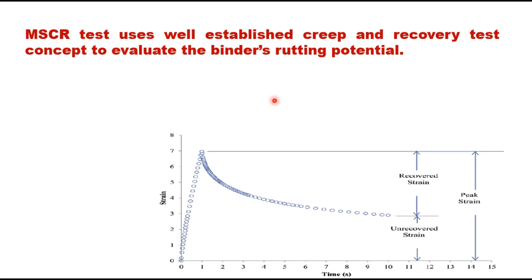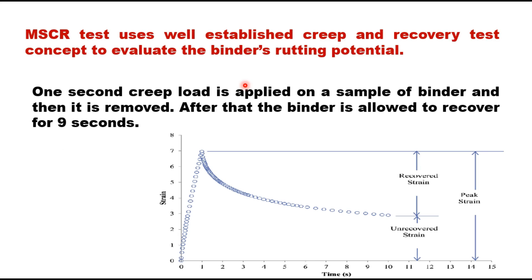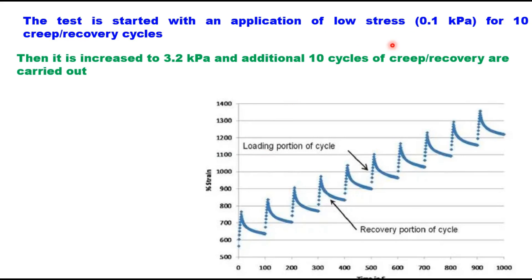The MSCR test uses a well-established creep and recovery test concept to evaluate the binder's rutting potential. Using the dynamic shear rheometer, a 1-second creep load is applied to a sample of binder and then removed, after which the binder is allowed to recover for 9 seconds. The test is started with an application of low stress of 0.1 kPa for 10 creep-recovery cycles, and then it is increased to 3.2 kPa for an additional 10 cycles of creep and recovery.